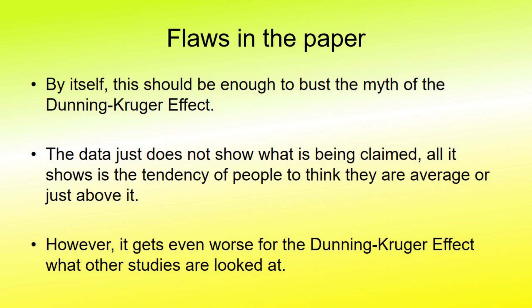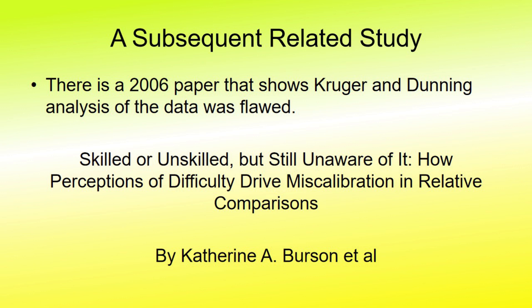However, it gets even worse for the Dunning-Kruger effect when other studies are looked at. There is a 2006 paper that shows Dunning-Kruger's analysis of the data to be flawed. The paper is called Skilled or Unskilled, but Still Unaware of It. How Perceptions of Difficulty Drive Miscalibration in Relative Comparisons.